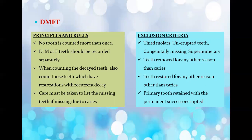The next question was about the DMFT index. The principles and rules are: no tooth is counted more than once; D, M, or F should be recorded separately; when counting decayed teeth, also count those with restorations with recurrent decay; and care must be taken to list missing teeth if missing due to caries. Exclusion criteria include third molars, unerupted teeth, congenitally missing teeth, supernumerary teeth, teeth removed for reasons other than caries, teeth restored for reasons other than caries, and primary teeth retained with the permanent successor erupted.